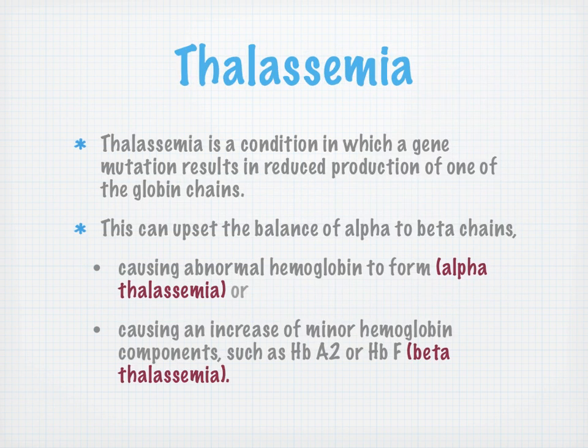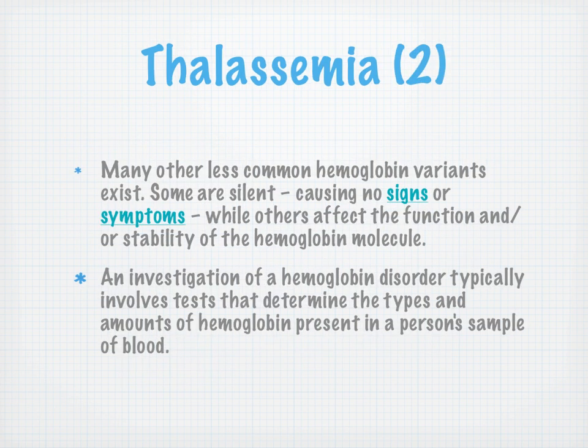What's thalassemia? Thalassemia is a condition where gene mutation resulted in reduced production of one of the globin chains. The apple cart — the balance of alpha to beta chains — is upset. We end up with abnormal hemoglobin in alpha thalassemia, or an increase in minor hemoglobin components like HbA2 or HbF in beta thalassemia. Alpha thalassemias result from mutations that cause decreased synthesis of structurally normal globin. For beta thalassemia, there is only one beta globin gene with two alleles.